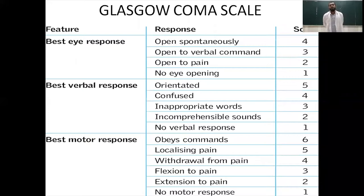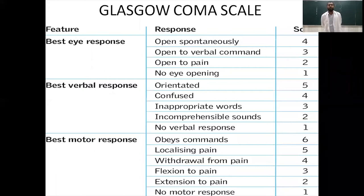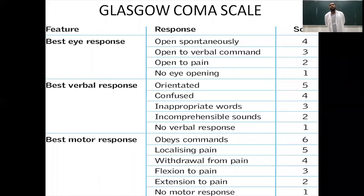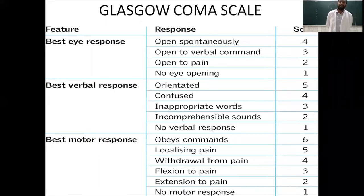The best motor response is: the patient obeys commands — that is 6 — or is able to localize pain, withdrawal from pain, flexion to pain, extension to pain, and no motor response. The highest possible score a person can attain on the Glasgow Coma Scale is 15 and the least is 3. This is important to remember — it is not zero; the least a patient can be given is 3.